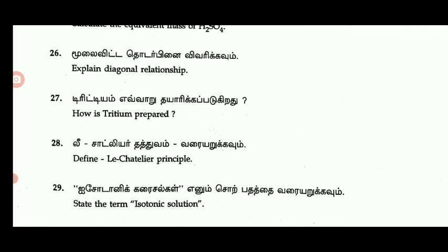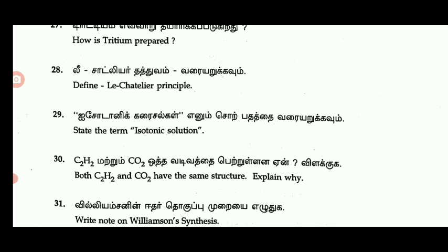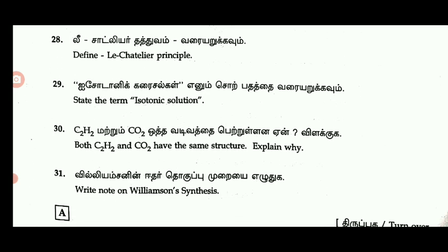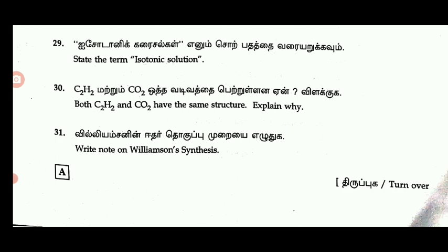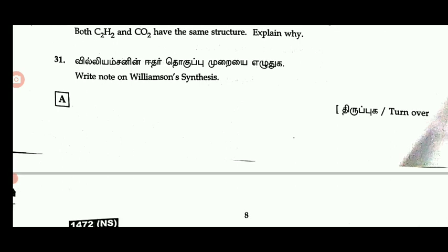The next one is Tritium. It's very important — how is Tritium prepared? The next one is Le Chatelier's Principle. The next one is isoelectronic species. Isoelectronic solution. The next one is C2H2. What is CO2? The next one is E3, then C31: write notes on Williamson synthesis.